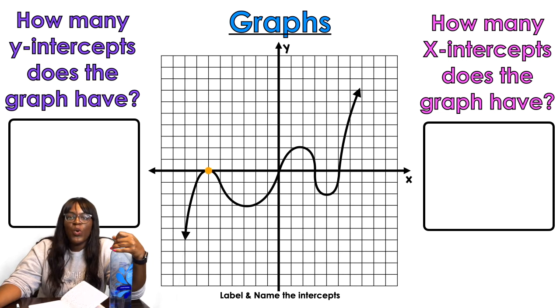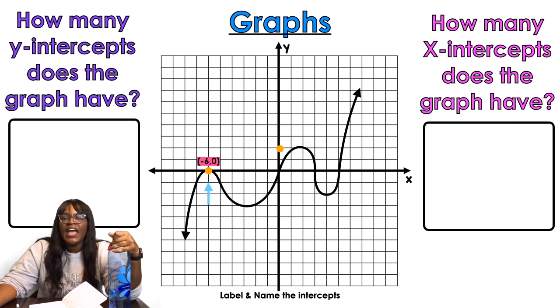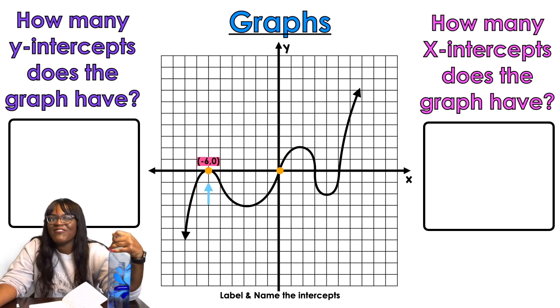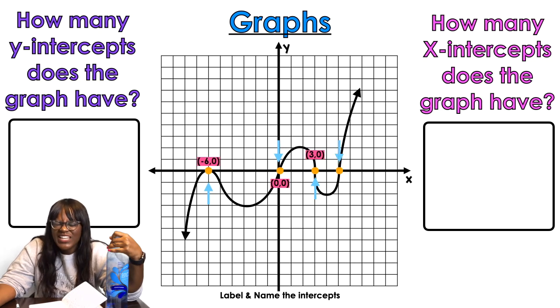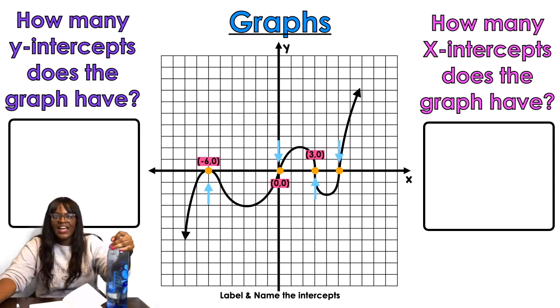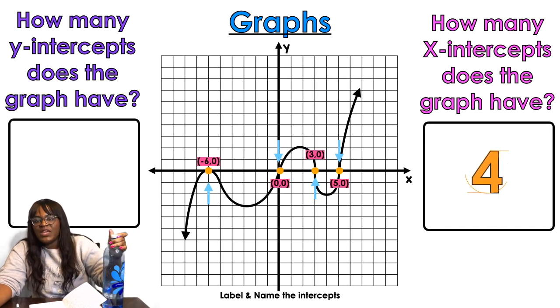So here we go. I have one point there, negative four comma zero. Is that what that says or is it negative six? The computer's far away from me, I can't see, I'm blind. Anyway, then it touches it right in the middle at the origin, so that's gonna be zero zero. It touches it again at three comma zero, and then it touches it one more time at five comma zero. So that means it touches the x-axis once, two, three, four times. So how many x-intercepts do I have? I have four x-intercepts.